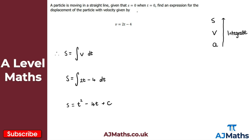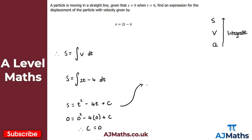However, we have boundary conditions: s equals 0 when t equals 0. So substituting those values in: 0 equals 0 squared minus 4 lots of 0, plus c. That gives us c equals 0. Which tells us that s is just equal to the original expression — s equals t squared minus 4t.